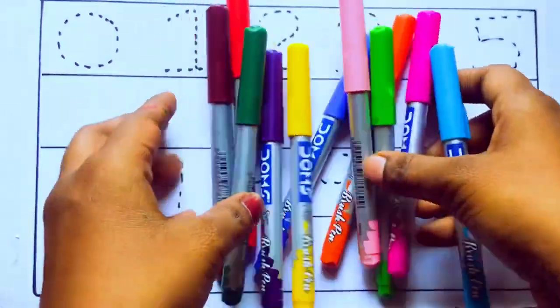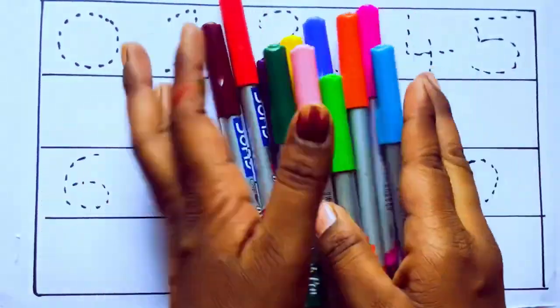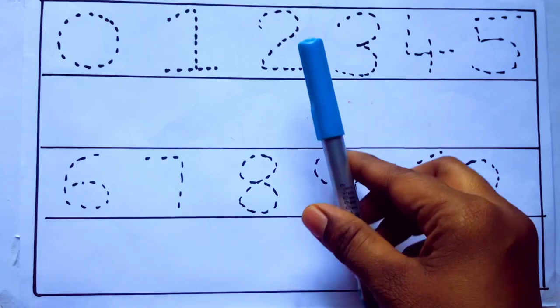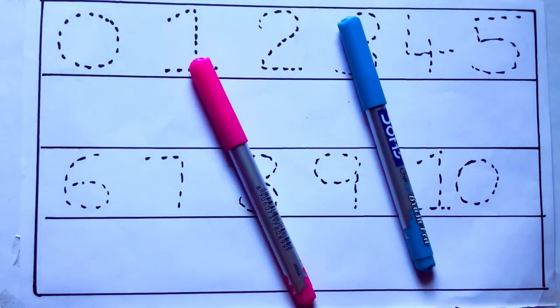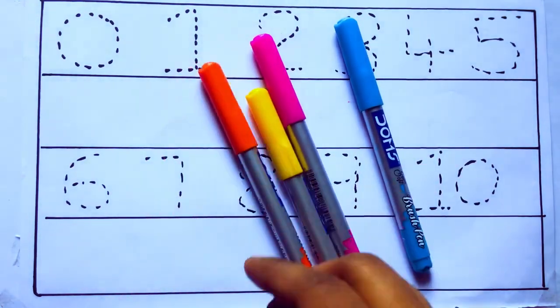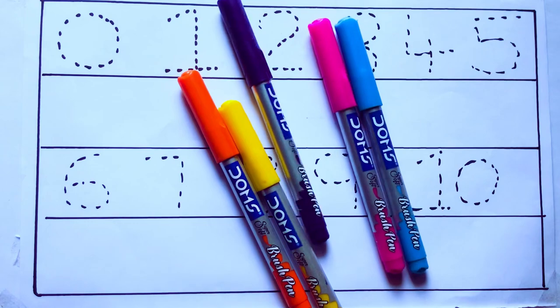Let's learn some colors. These are all the color pencils. Let's learn the names: sky blue color, pink color, yellow color, orange color, violet color.